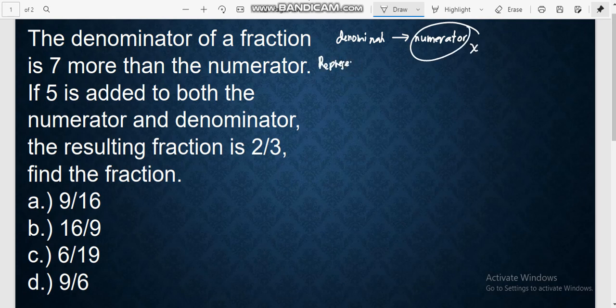The representation. You have the numerator, that is x, and our denominator. You have the denominator of a fraction is 7 more than the numerator. So we have x plus 7.